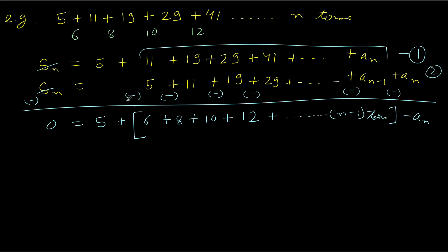We simply wrote the series, shifted it by one term — 5 plus 11 plus 19 plus 29 and so on — and then subtracted. When you do that, you get 0 for the S_N part, you get the first term 5, and the differences 6, 8, 10, and so on form an AP. The total was N terms; we didn't consider one, so this arithmetic progression has N minus 1 terms. In the end, we also have minus A_N since we shifted by one term. Therefore, bringing A_N to the other side: A_N equals 5 plus the sum of this arithmetic progression.